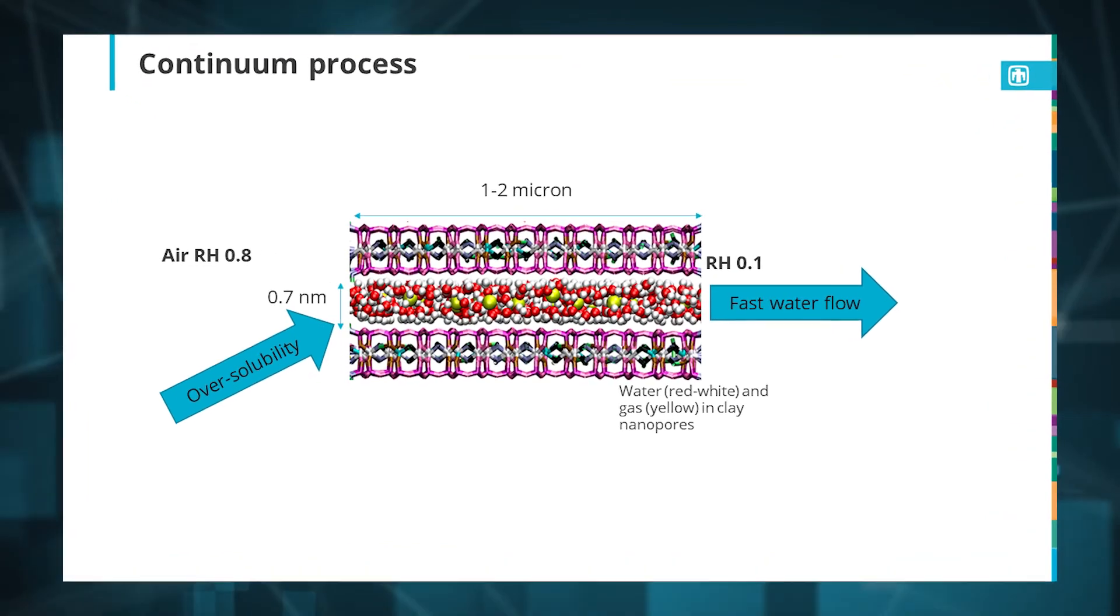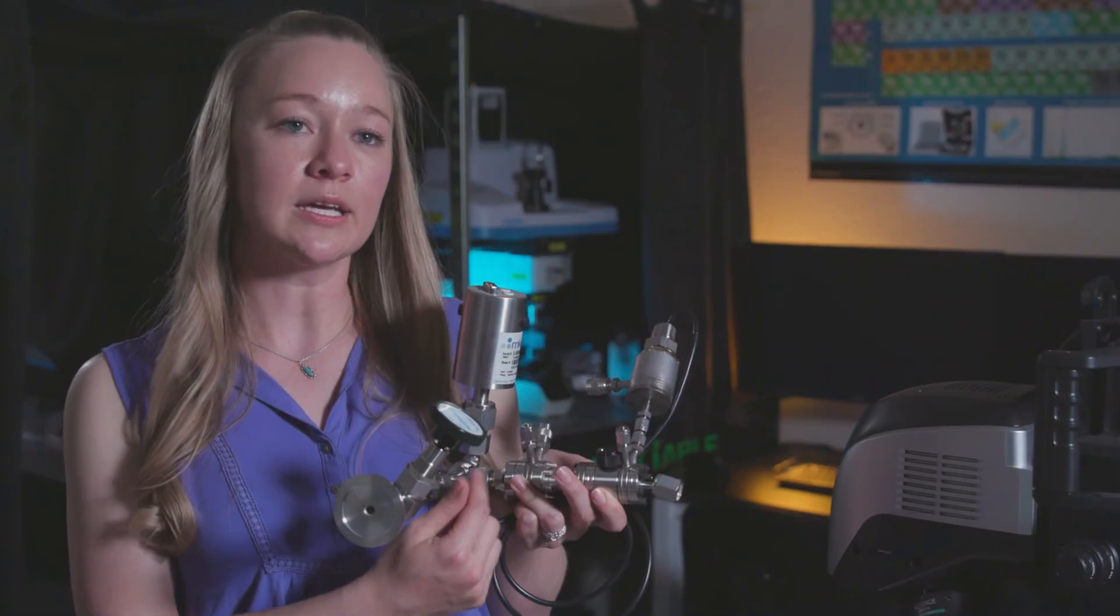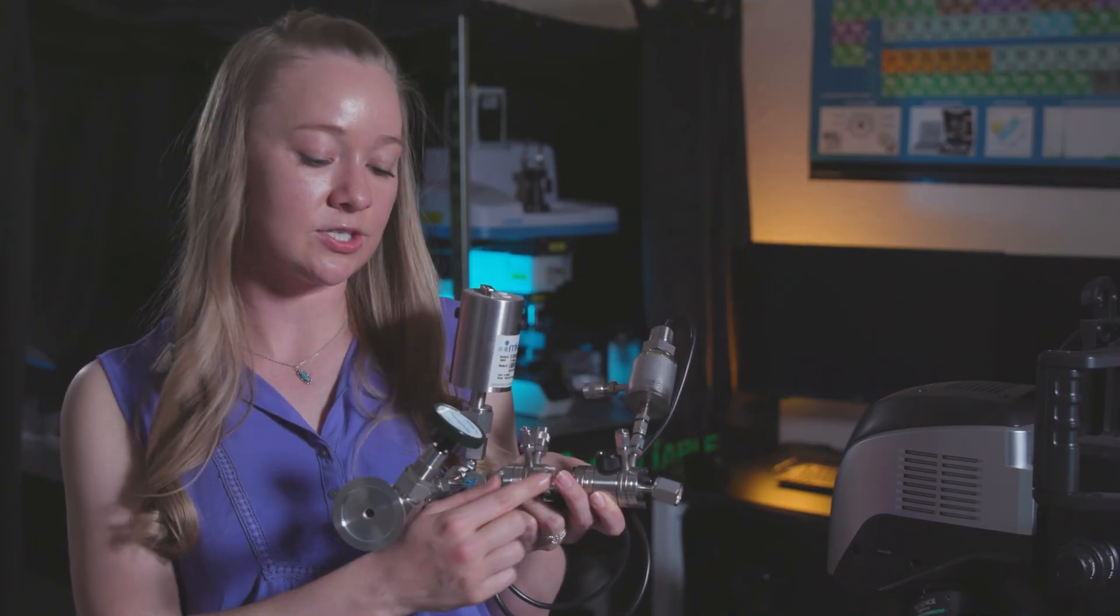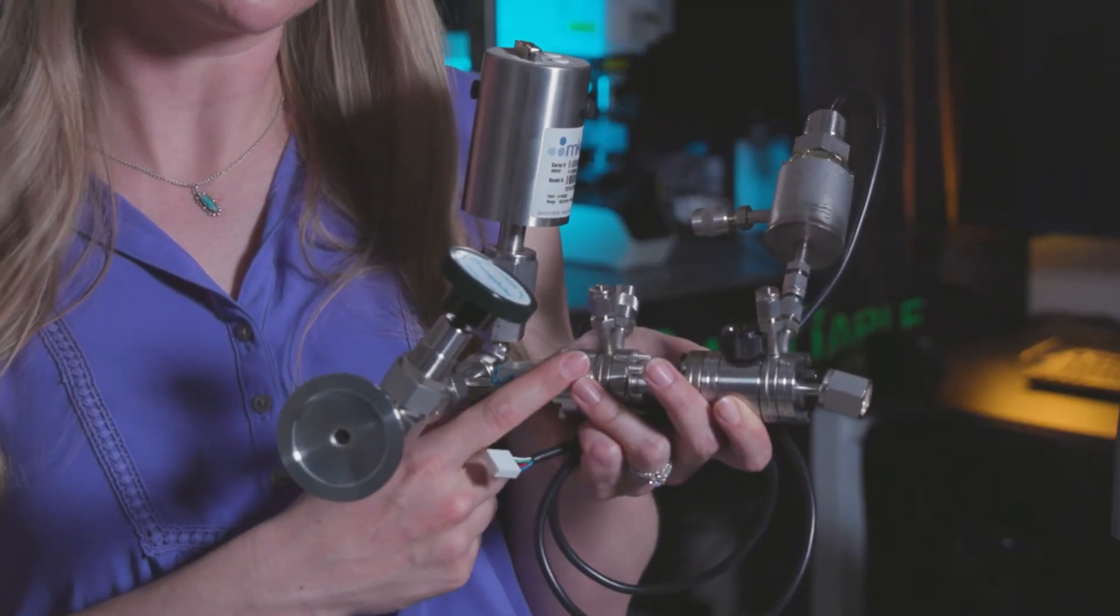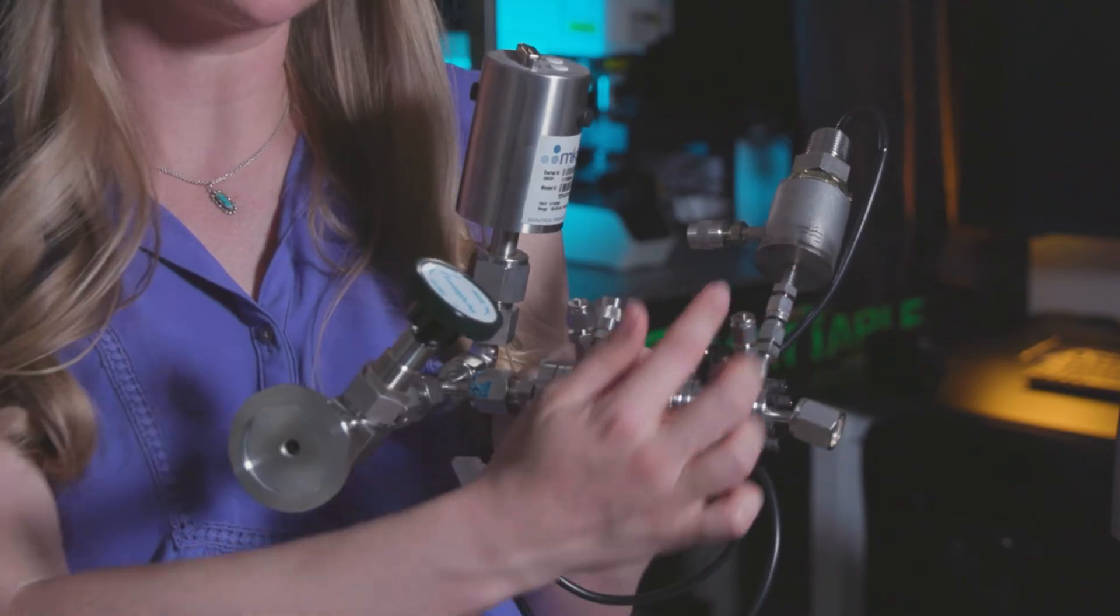In the continuous method, we took a larger volume of clay and packed a column. We exposed and hydrated it with a certain level of relative humidity, and then we infiltrated the clay with a certain concentration of CO2, which was monitored downstream with a CO2 meter.